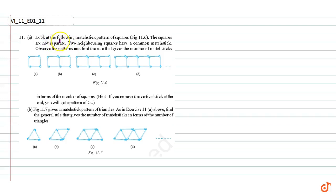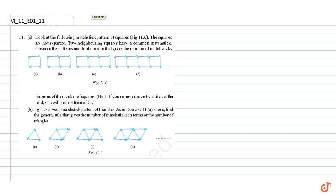In this question, look at the following matchstick pattern of squares, Figure 11-6. The squares are not separate — two neighboring squares have a common matchstick. Observe the patterns and find the rule that gives the number of matchsticks in terms of the number of squares.